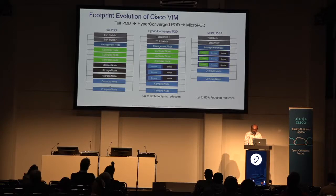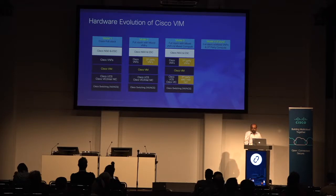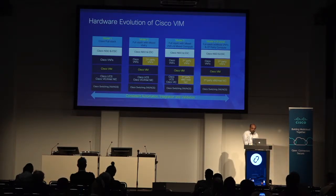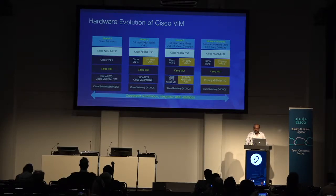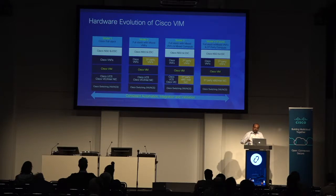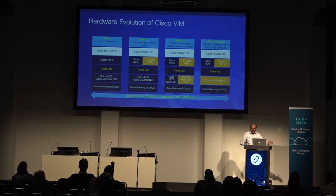Hardware support has also evolved. We started with all-Cisco UCS C or B-series. Third-party VNFs started showing up, which wasn't a big deal as long as they adhered to OpenStack APIs. Then customers wanted to reuse existing third-party computes, so the control plane remained Cisco while data plane computes became third-party. Now we're supporting a full third-party infrastructure on which NFVI will run. Throughout all this evolution, NIC cards have also changed — from Cisco VIC to Intel NIC.